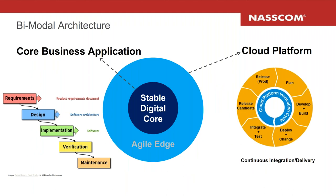Bimodal IT represents the stable digital core with an agile edge around it. The stable core follows the waterfall method — collect requirements, design the architecture, go through implementation, verification, and then maintenance. Whereas in the cloud platform, it goes through an iterative method: you plan, develop, deploy, integrate, test, release, and then plan again. It keeps going through this continuous integration and continuous delivery. This is the shift between the two different architectures.